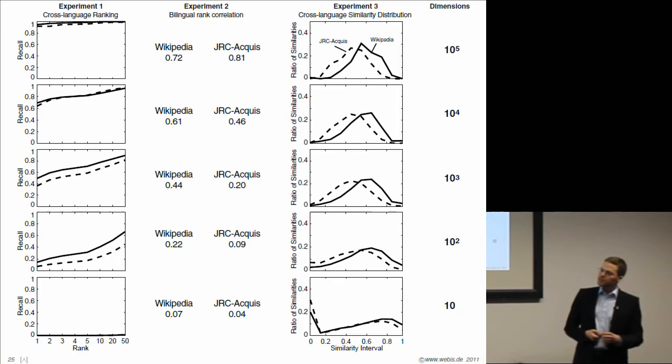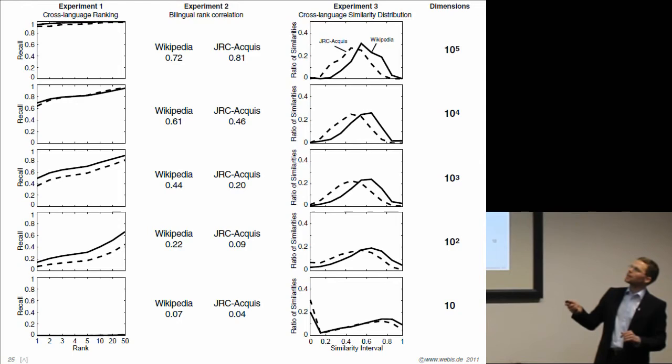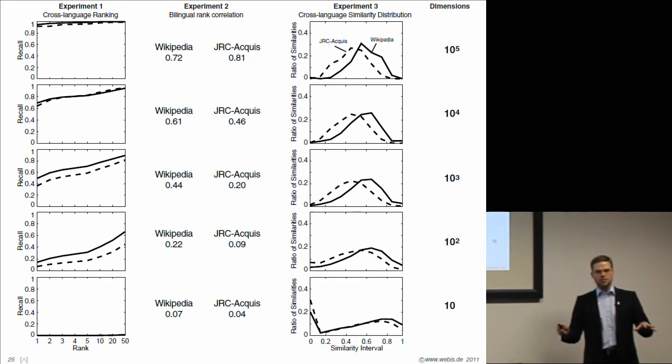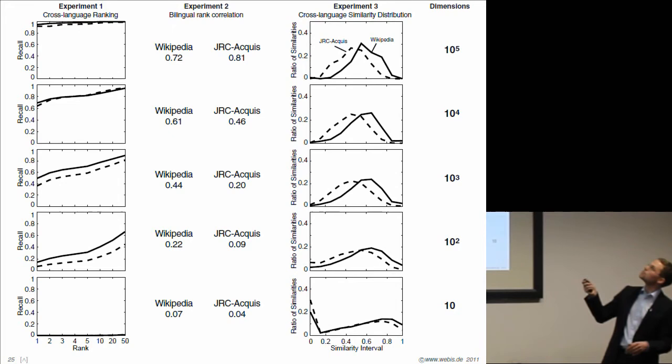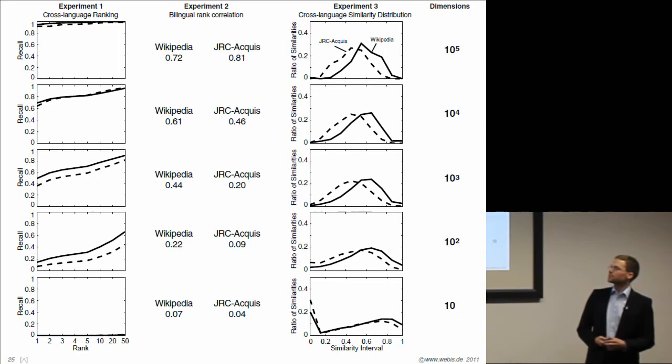We have done another four experiments, so it is a total of six. We have done these experiments with two other state-of-the-art models using two test collections and on six different pairs of languages, all in all computing more than a hundred million similarities with these models. I will show you just some of the results. I'm not going to explain all these graphs. It would take too long. But I want to show you just one feature of these graphs.